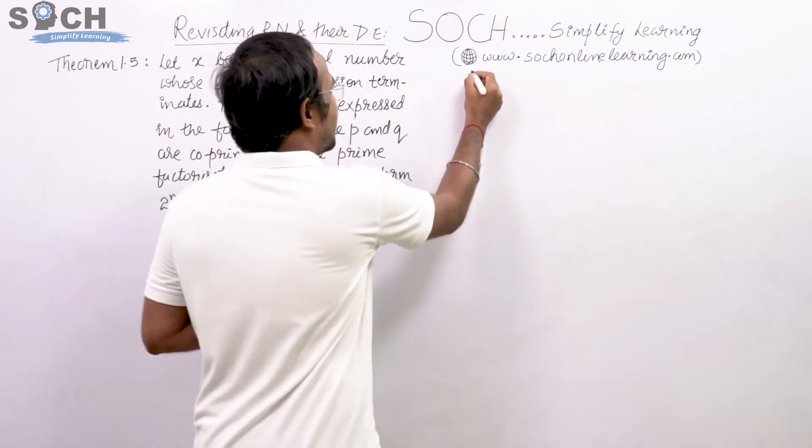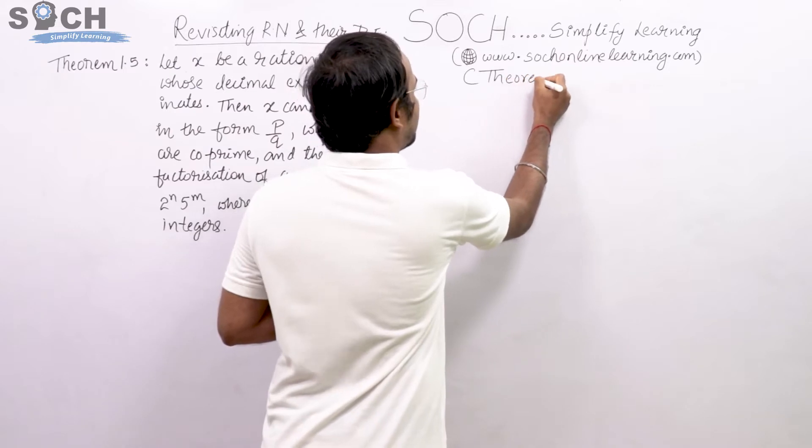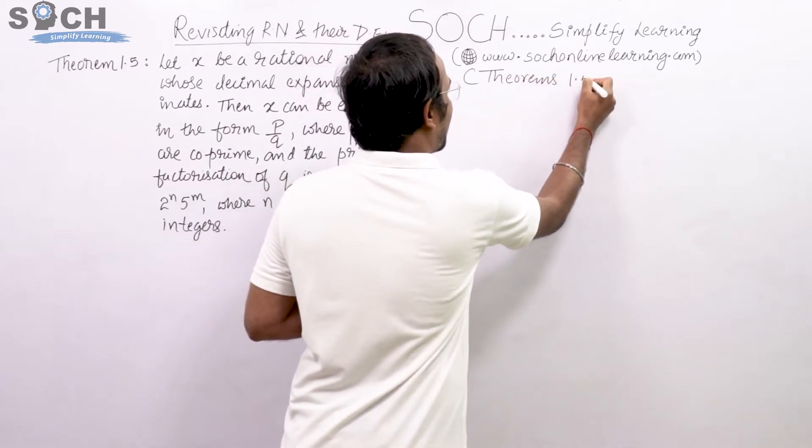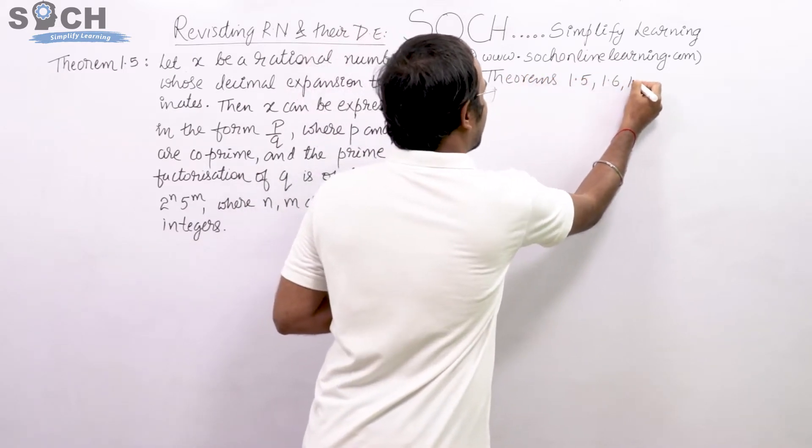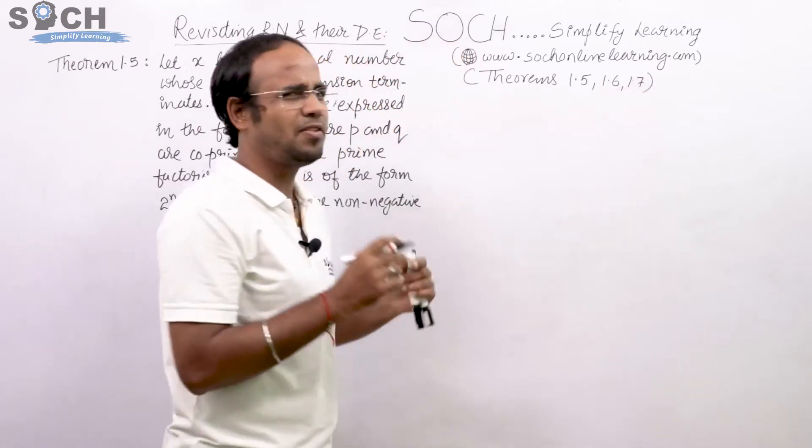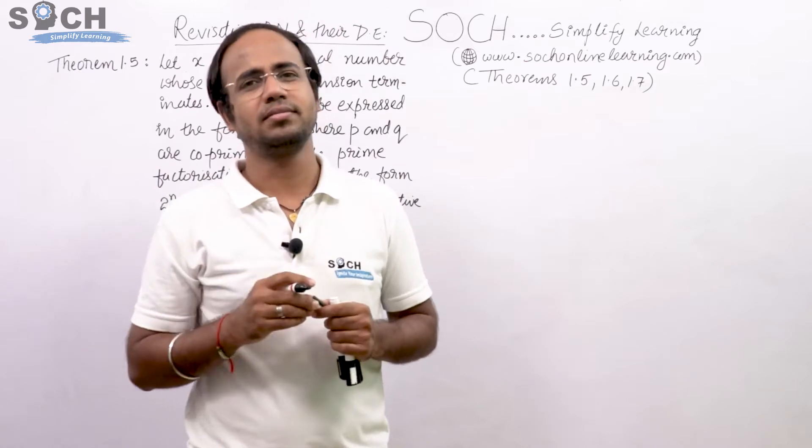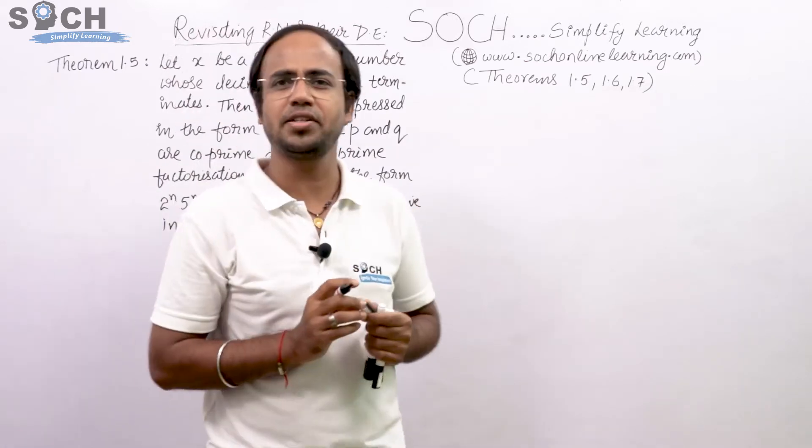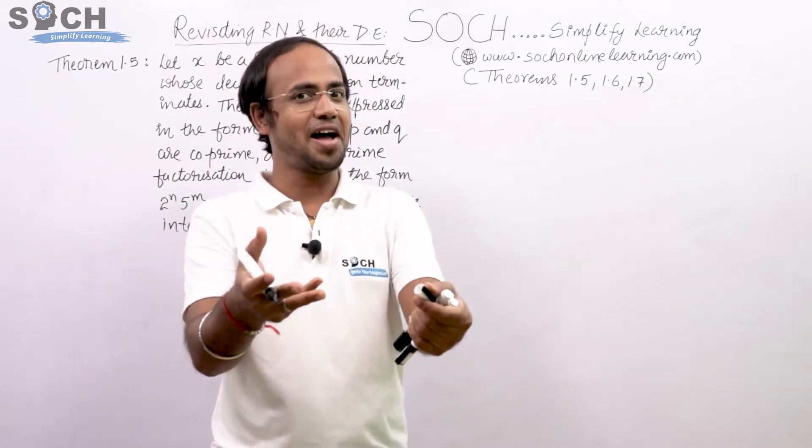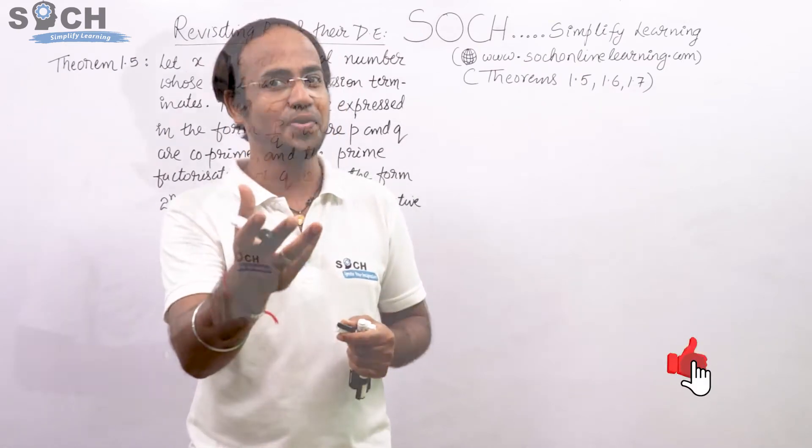The theorems are theorems 1.5, 1.6, and 1.7. People find it very difficult to interpret and remember because of its complexity of the statement. So let me simplify these three theorems within no time.